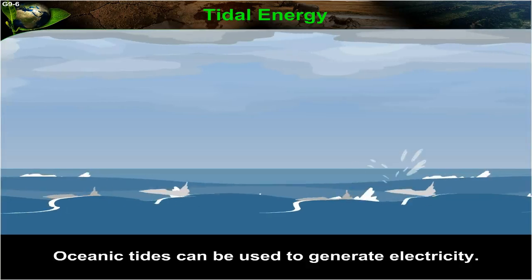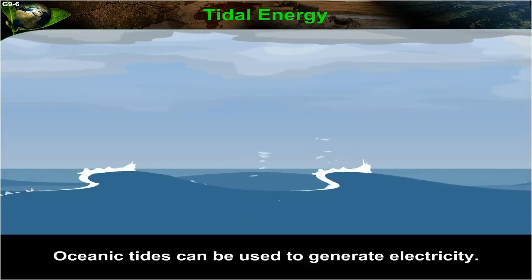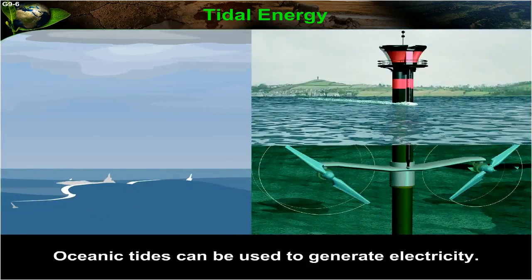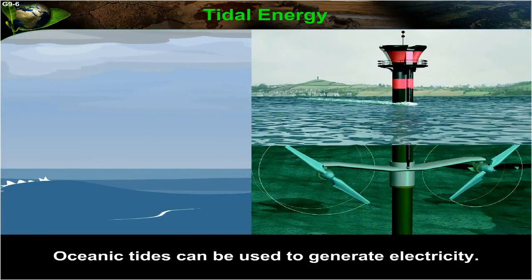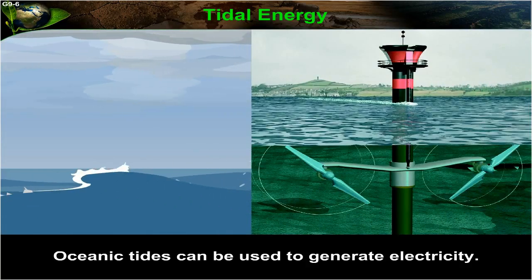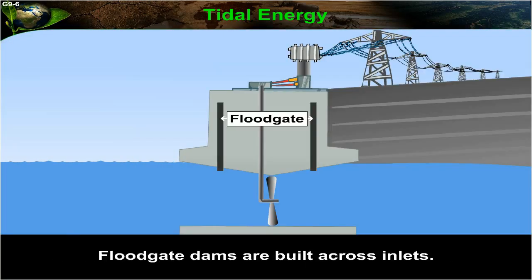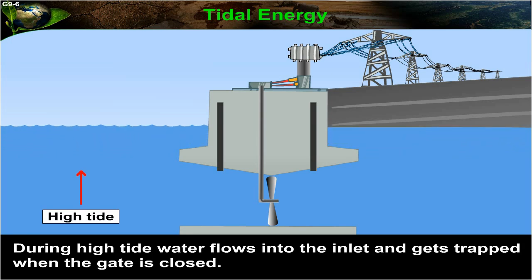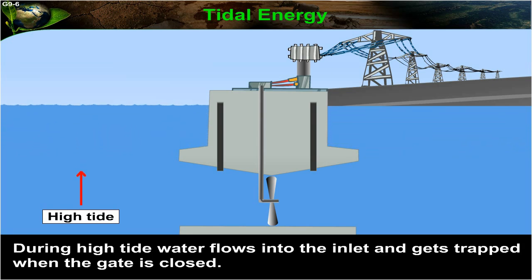Tidal energy: oceanic tides can be used to generate electricity. Floodgates are built across inlets. During high tide, water flows into the inlet and gets trapped when the gate is closed.